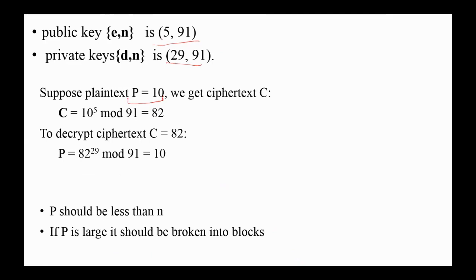Suppose that the plaintext p equals 10, we can get the cipher C as follows: 10 to the power 5 mod 91, which is 82. And this ciphertext can be sent over the communication channel to the receiver. Now on the receiving end, we have the cipher and the private key. To retrieve the original text, the cipher is raised to the power 29 mod n, which is 91. And this value is 10, which is the message that was sent.